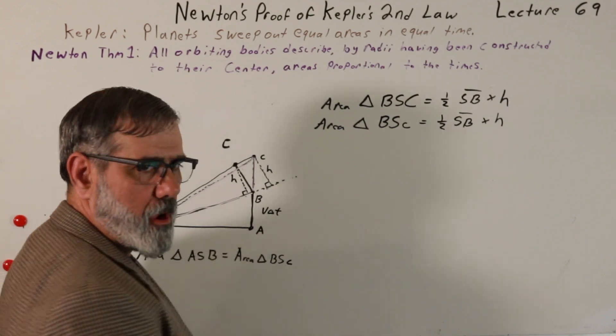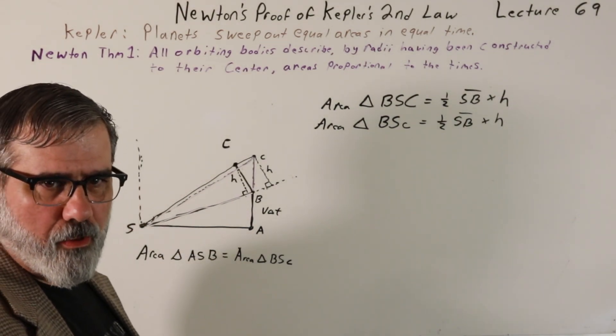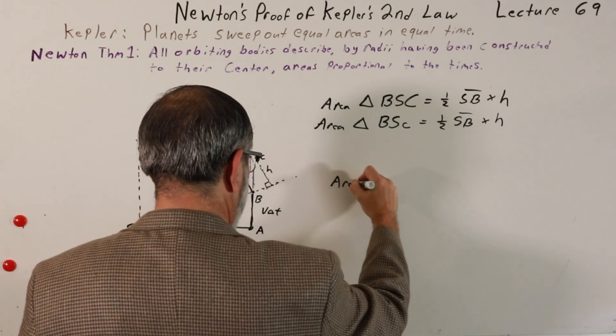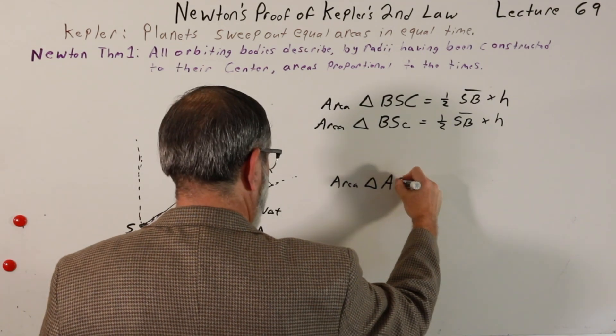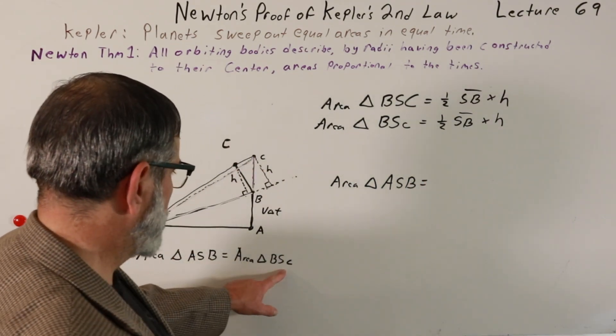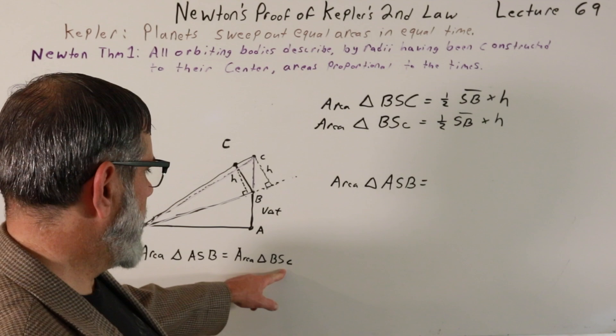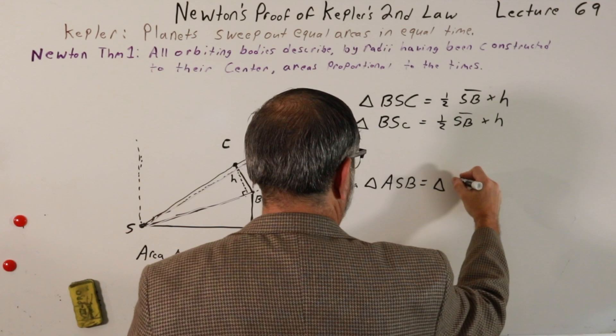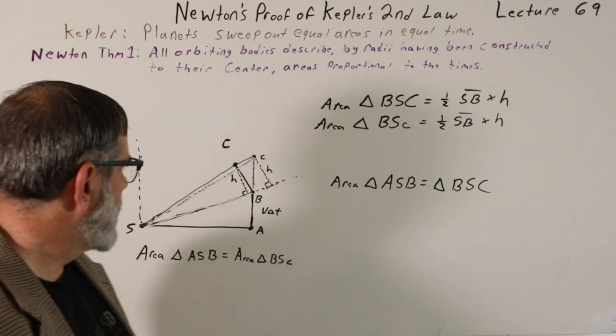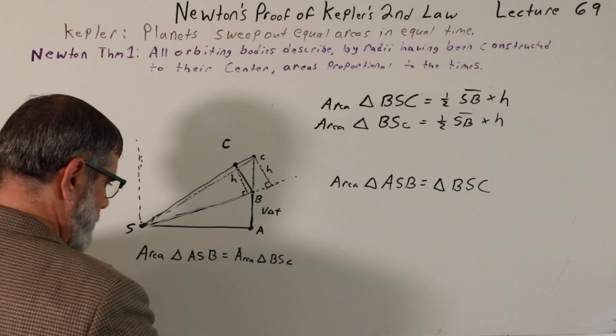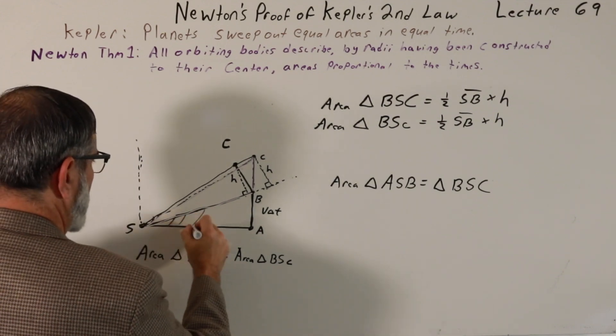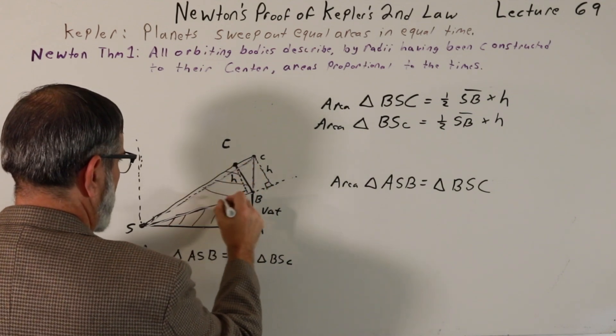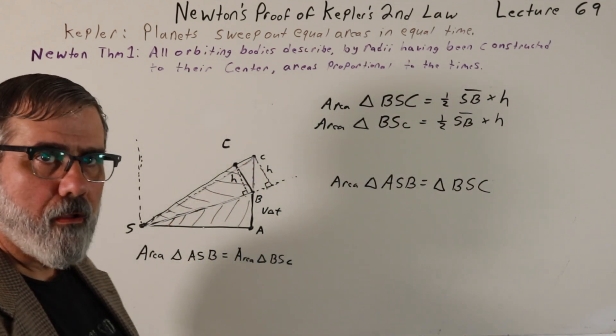Well, through the transitive property, if two things are equal to the same thing, then they're equal to each other. That tells us that the area of BS lowercase c is equal to the area of ASB. If two things are equal to the same thing, then they're equal to each other. So we have the triangle BS lowercase c, which is equal to the area of BS uppercase C. So that's telling me that this area is the same as this area.